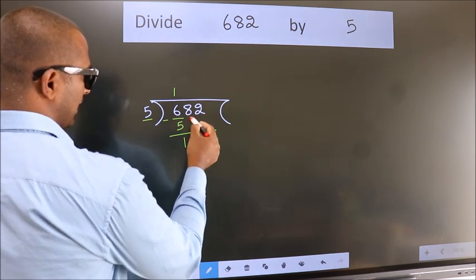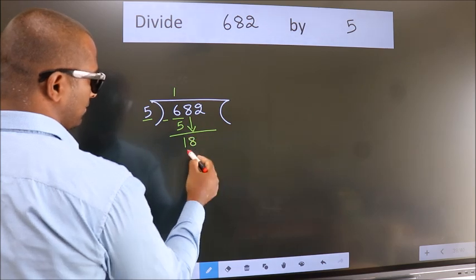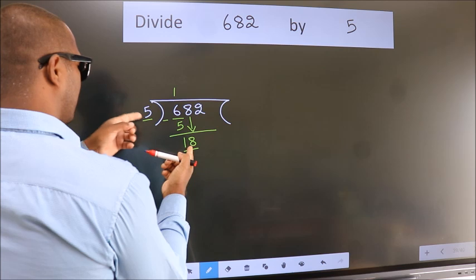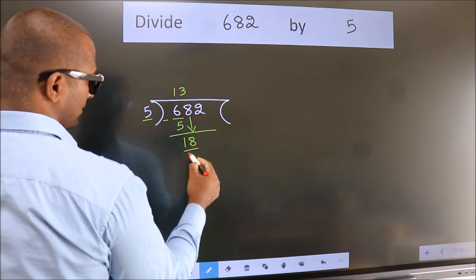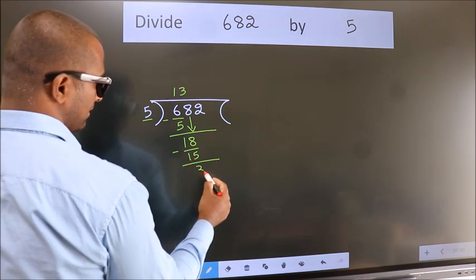After this, bring down the beside number. So 8 down, making 18. A number close to 18 in the 5 table is 5 times 3 is 15. Now we subtract and get 3.